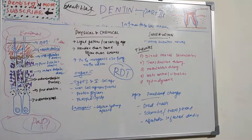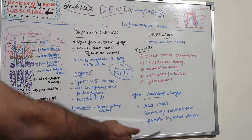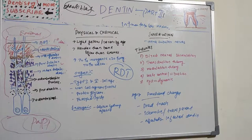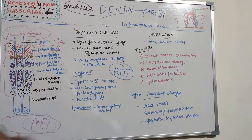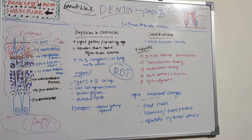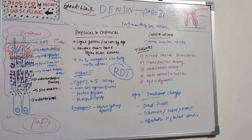Infected dentine is the part contaminated with microorganisms and their toxins, and contains demineralized dentine. Affected dentine is not occupied by microorganisms — it only contains toxins produced by microorganisms of the infected dentine, and shows demineralization. Collagen fibers are denatured in infected dentine, while in affected dentine the collagen fibers demonstrate cross-banding and are physiologically remineralizable.